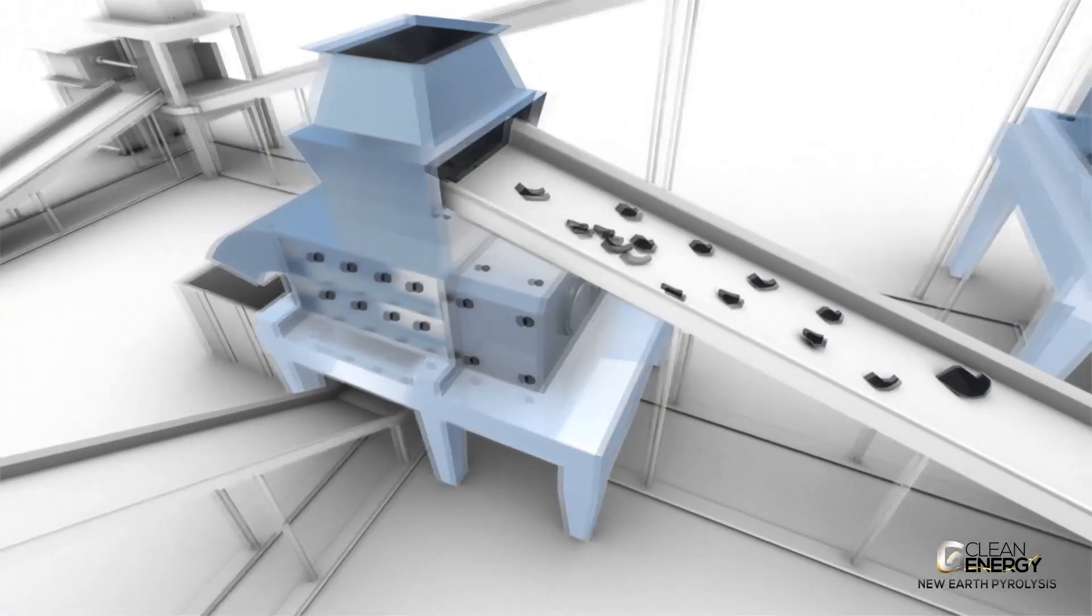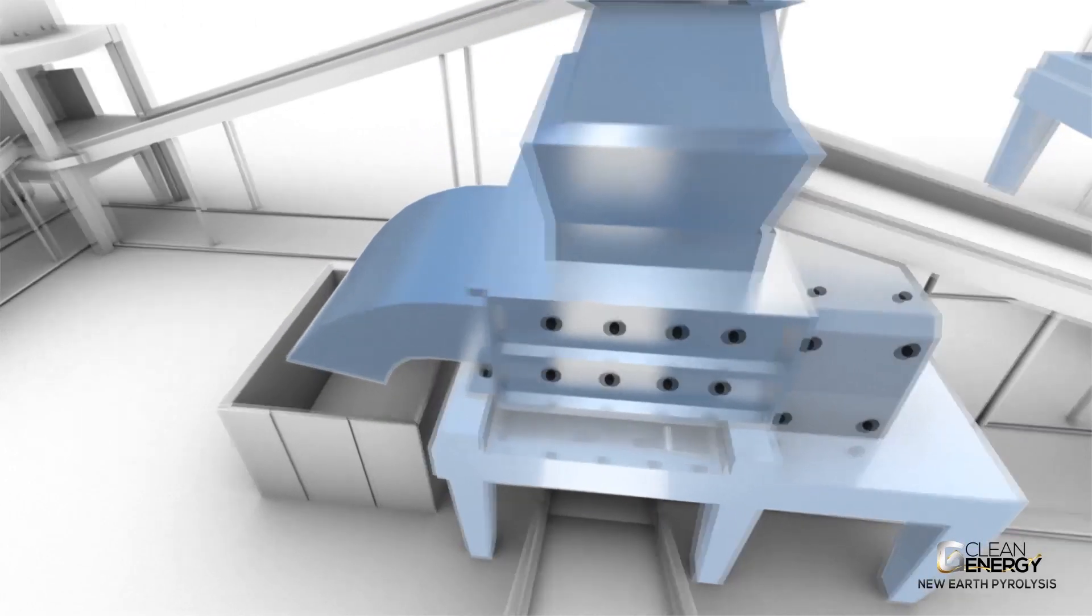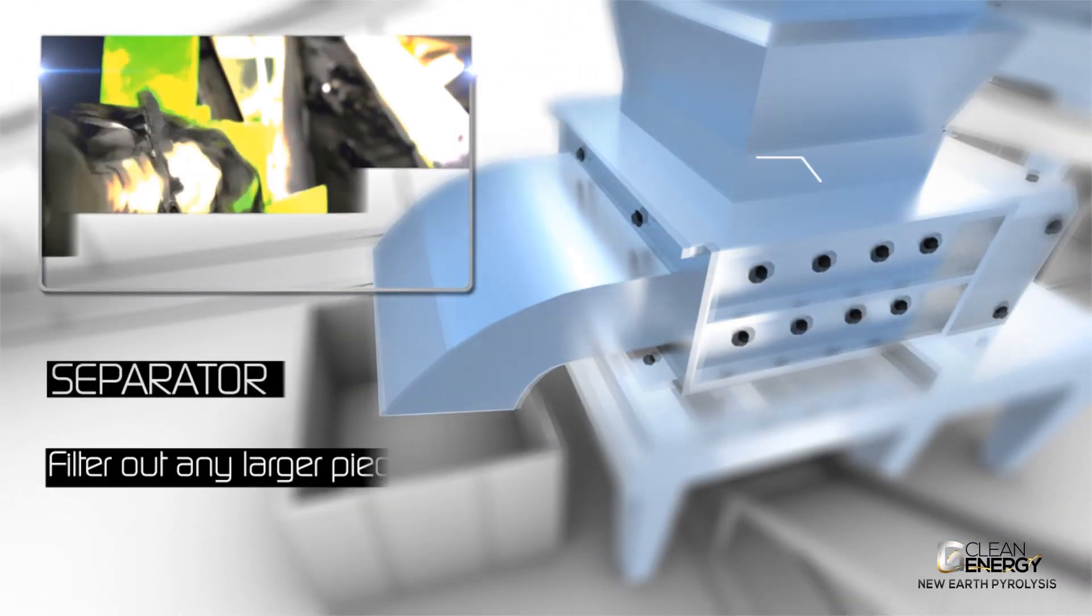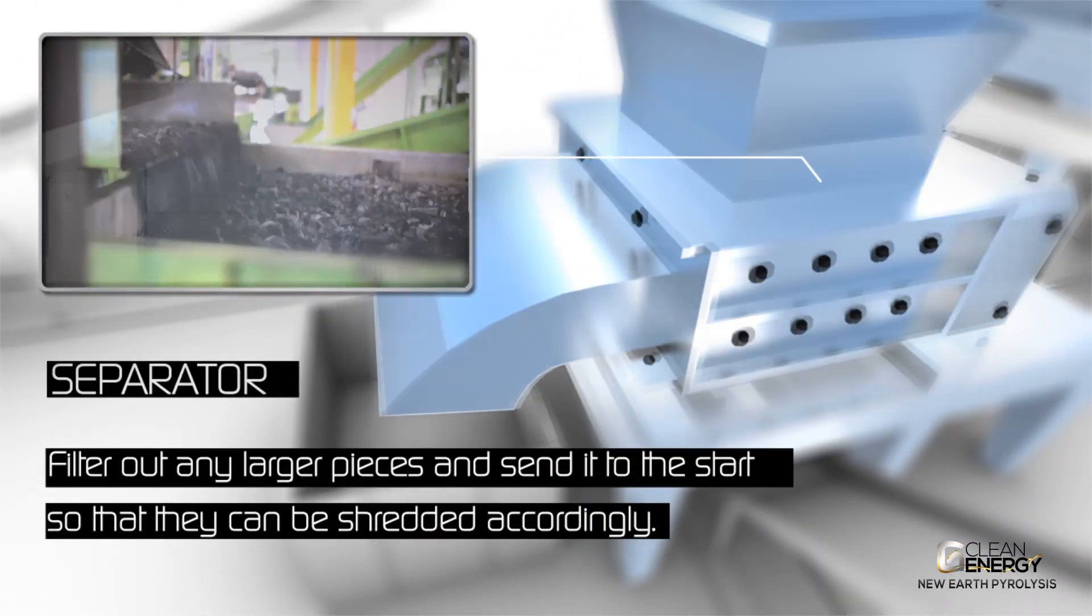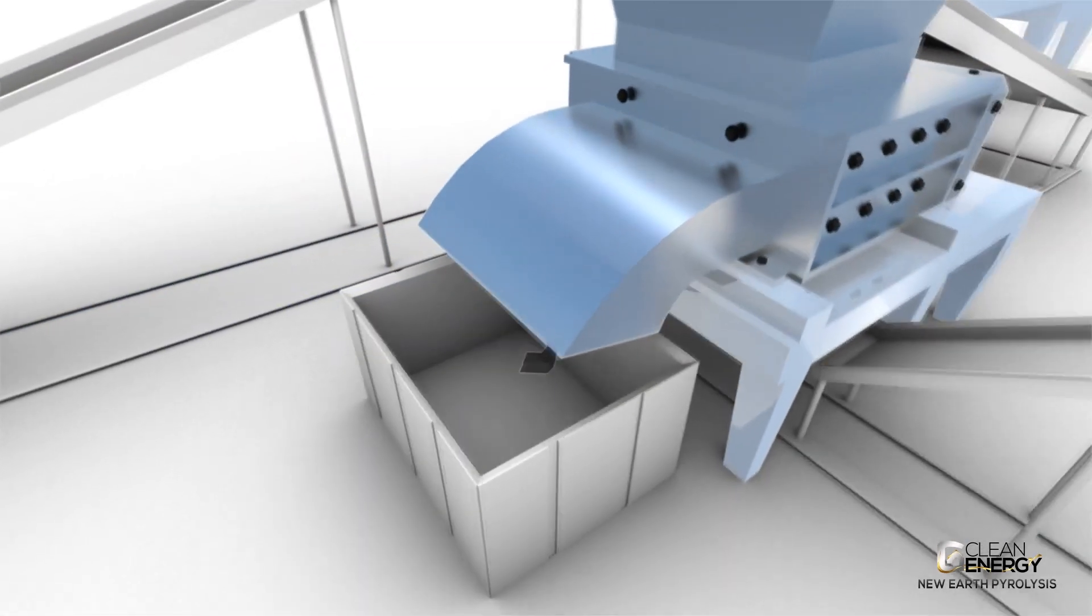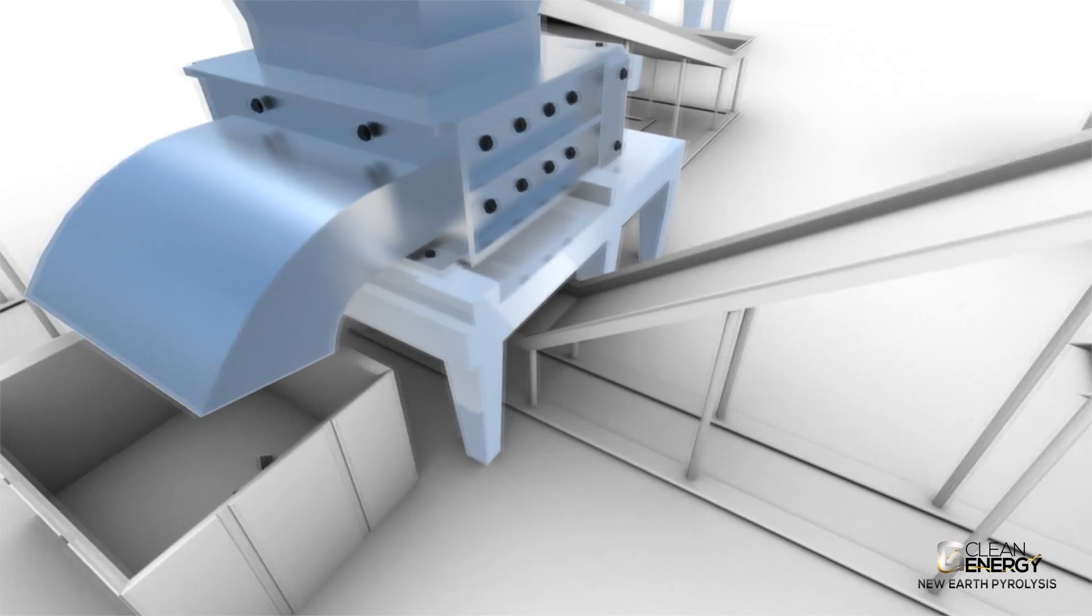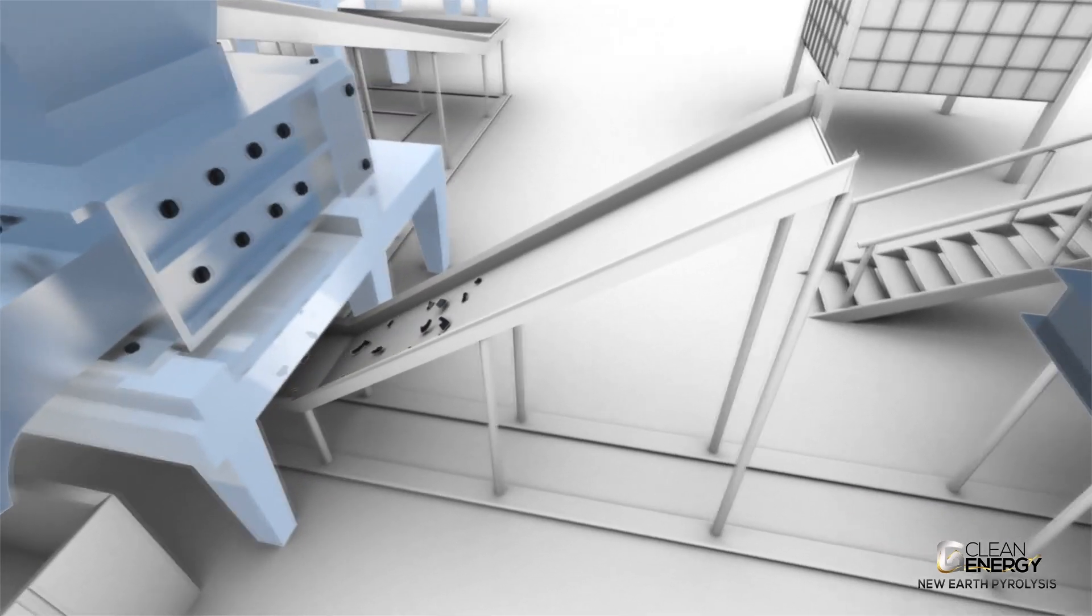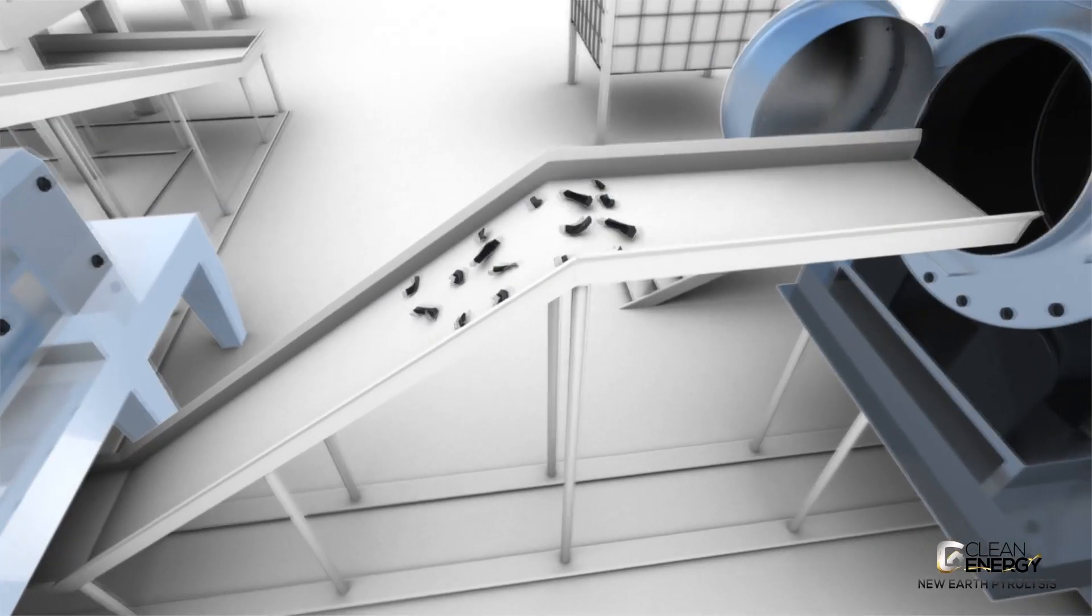Any larger pieces are filtered out and returned to the start of the process so that they can be shredded accordingly. The shredded tyres are carefully weighed and then follow a secondary conveyor belt which leads to the key pyrolysis reactor.